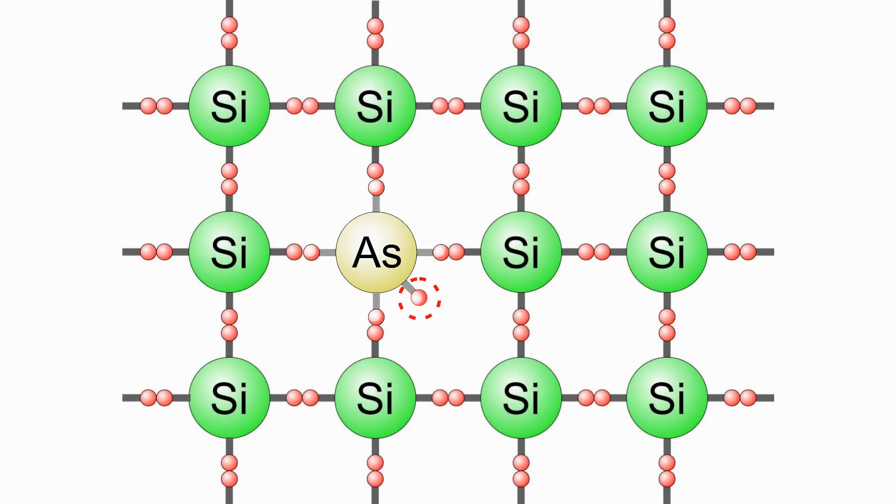It takes very little electrical energy to raise this unbonded electron from the valence band into the conduction band, where it can move around and conduct electricity. Although the doped silicon is still electrically neutral, it has the same number of protons with positive charge as electrons with negative charge. It is called n-type material because the electrons which are free to move have a negative charge.